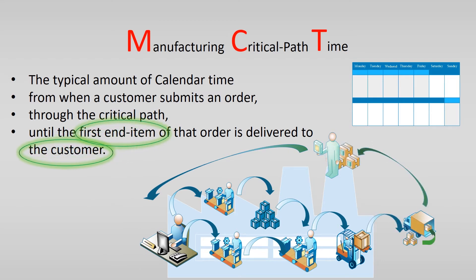We stop the clock as soon as the first end item of the order is delivered to the customer. As delivering value to the customer is the main focus, we stop the clock when the customer can use the product — so this is the first end item delivered at the receiving point of the customer. For single items this is straightforward. But when a customer orders a set of items, it must be a set the customer can actually use. If different parts can only be used together, the clock stops when a complete useful set is delivered.